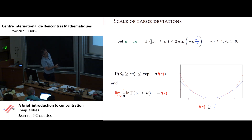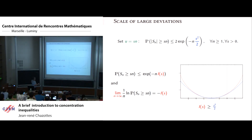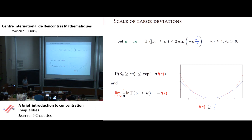In the large deviation setting, you take the logarithm divided by n and take the limit, getting exactly minus I(s). Plotting this red function against the quadratic function, they are more or less the same around zero. The goal of large deviations is to get this limiting result, whereas concentration inequalities are about what happens when n is finite. There is a common departure between large deviations and concentration inequalities.